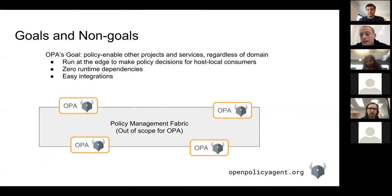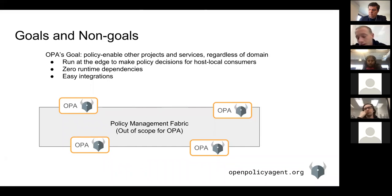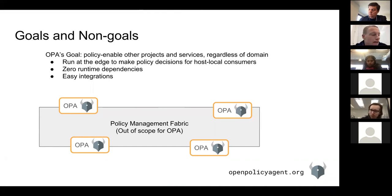We want to make OPA really easy to use and take zero runtime dependencies — it's always been one of the goals to make it very easy to integrate and deploy. OPA is really intended to be something like a host-local daemon that knows how to make authorization or more generally policy decisions for anything running on that host. The management of how you integrate and deal with multiple OPAs has always been out of scope for OPA, and this seems like a natural fit for SAFE.